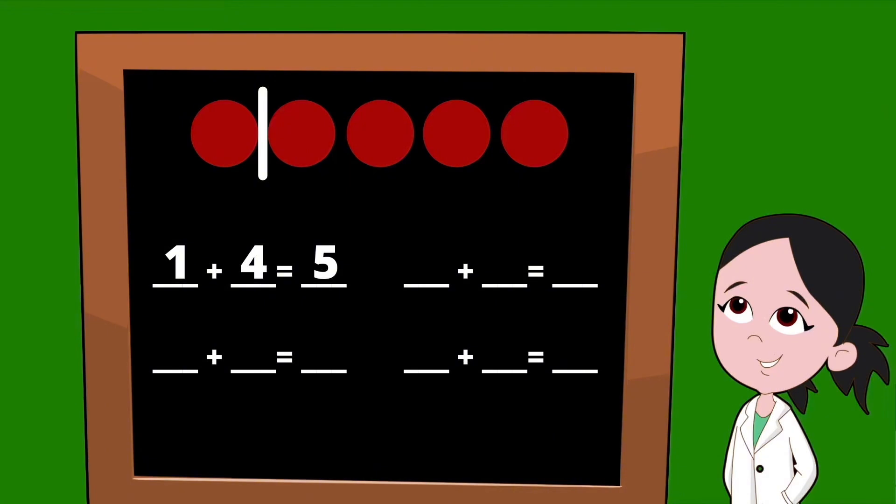Let's slide our line over one dot for our next set of partners. Our first partner is the number of dots on the left of our line, which would be two. Our second partner is the number of dots on the right, which would be three. Two plus three equals five.